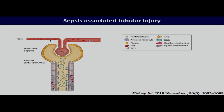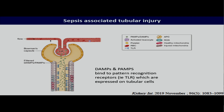The tubular cells are very sensitive and very vulnerable in sepsis for numerous reasons. Firstly, because the microcirculation may be affected. But they're also directly at the receiving end of toxic metabolites and various inflammatory mediators. The tubular cells are at the receiving end of everything that gets filtered out at glomerular level. And in sepsis, this will include DAMPs and PAMPs and associated inflammatory mediators.